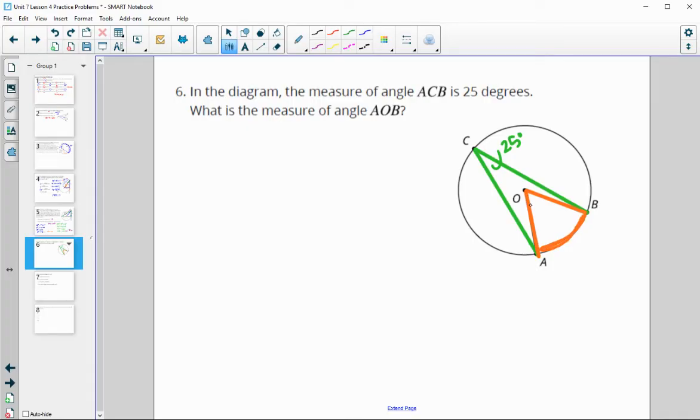And the central angle is formed by two radii. So remember that you get the arc by multiplying the inscribed angle by two. So this is 50. It's two times bigger than the inscribed angle. And then the central angle is equal to that arc. So the measure of angle AOB is equal to 50 degrees.